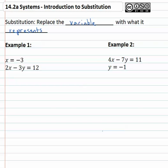Let's start with some very simple examples where we see that. Here we've got one equation that says x equals negative three. Another equation, two x minus three y equals twelve.